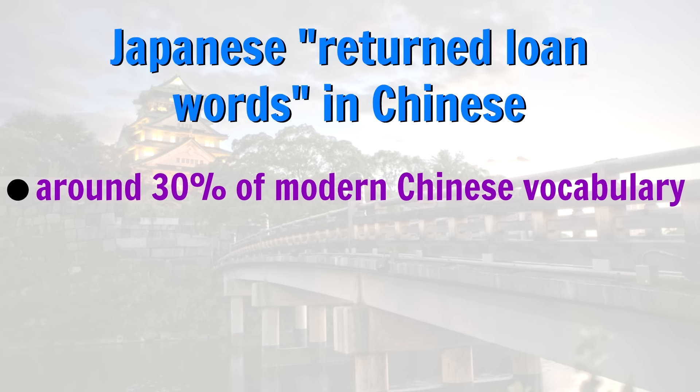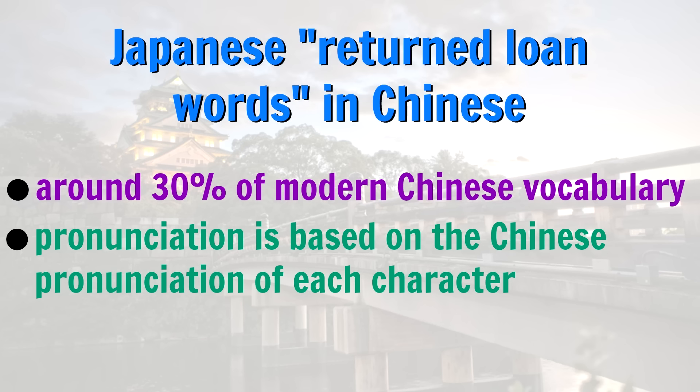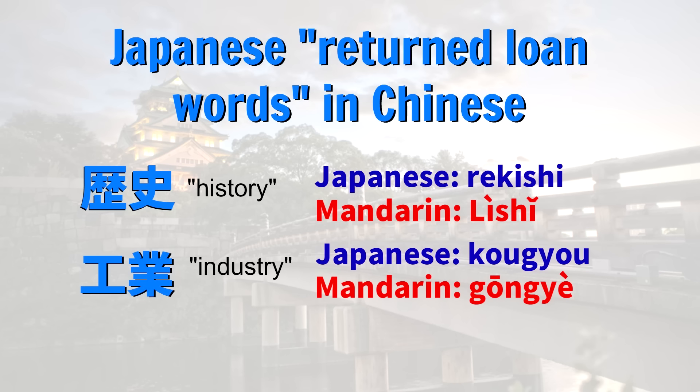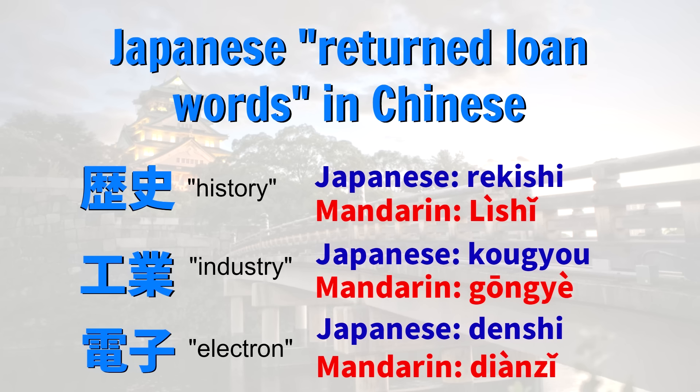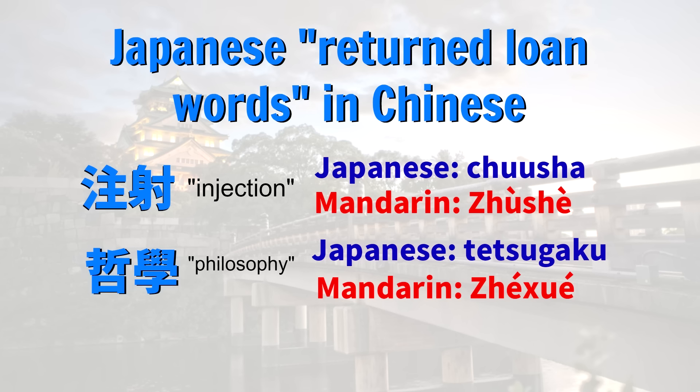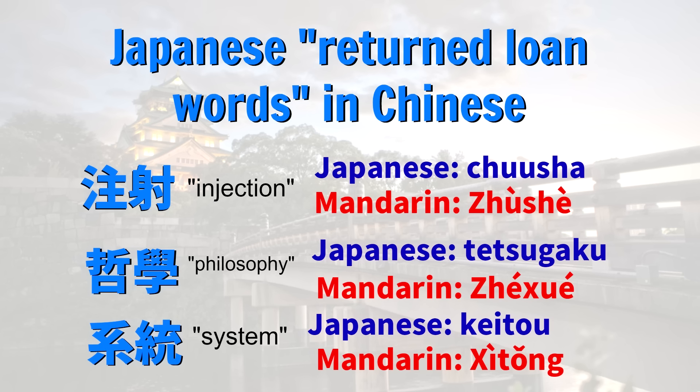Some sources say that such vocabulary accounts for around 30% of modern Chinese vocabulary. Of course, the way those returned loan words are pronounced is based on the modern Chinese pronunciation of the Chinese characters. Here are some examples: The word for history in Japanese Rekishi, in Mandarin. The word for industry in Japanese Kogyo, in Mandarin. The word for electron or electronic in Japanese Denshi, in Mandarin. The word for injection in Japanese Chusha, in Mandarin. The word for philosophy in Japanese Tetsugaku, in Mandarin. The word for system in Japanese Keto, and in Mandarin. And most Chinese people these days are probably not even aware that those words were borrowed from Japanese.